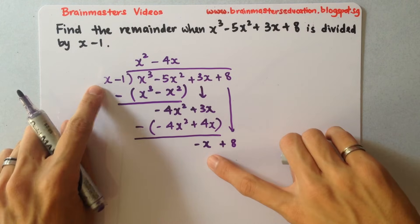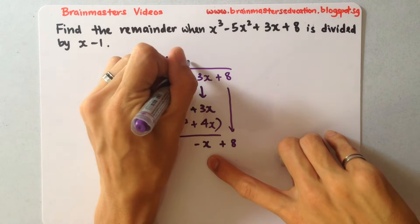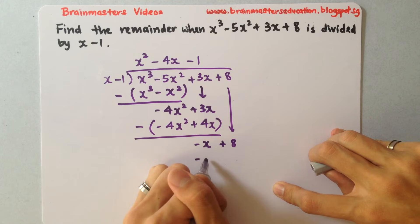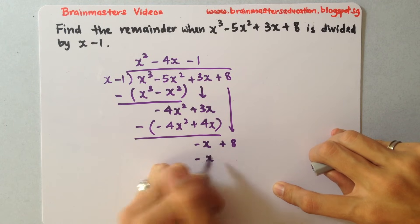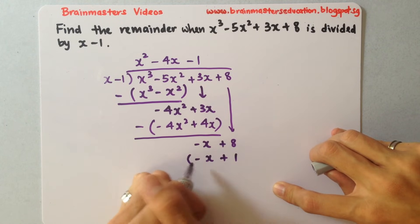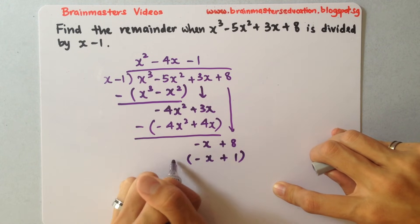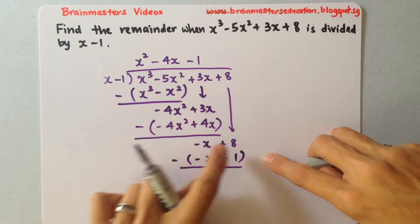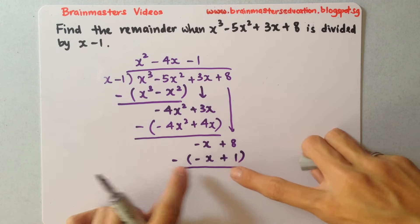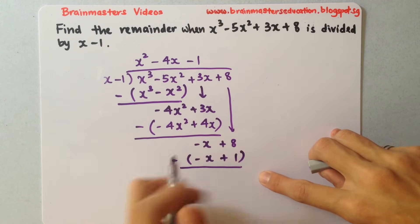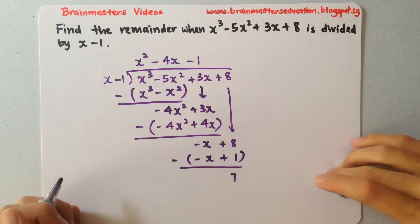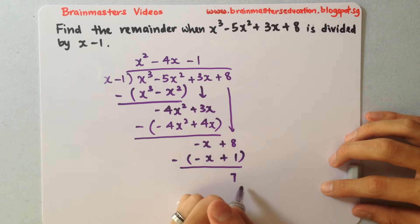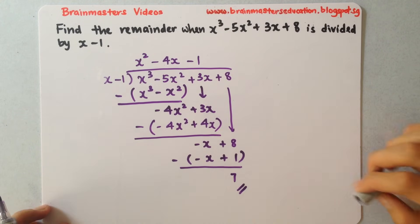So this and minus 1 gives you minus x plus 1. Same thing again — put a negative. Work this out: 8 minus 1 gives you 7. So here you go — you have found that your remainder is 7.